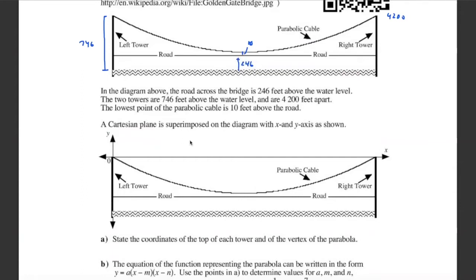A Cartesian plane is superimposed on the diagram, with a y-axis and an x-axis. The origin is at zero zero, placed at the top of the left tower. Going all the way across, the top of the right tower is still on the x-axis.